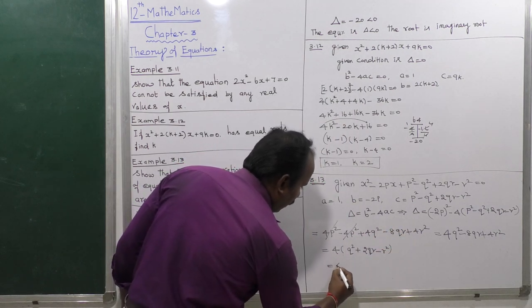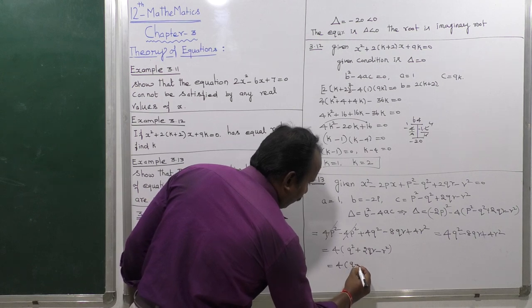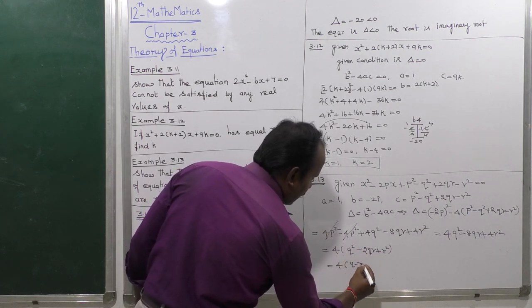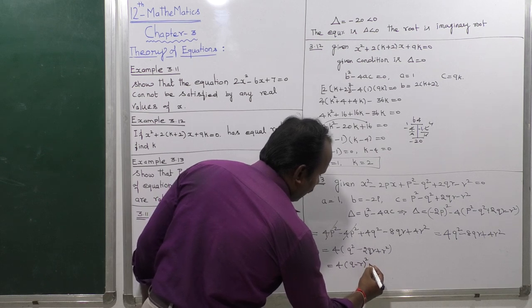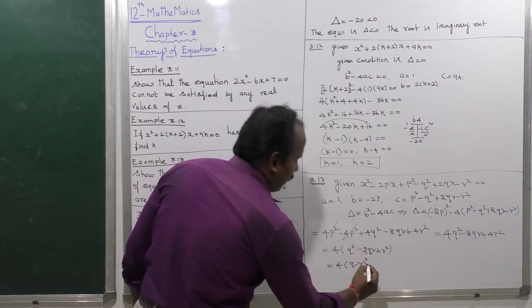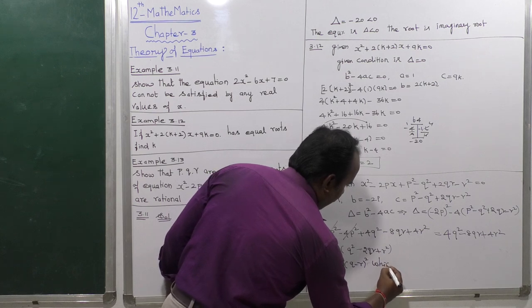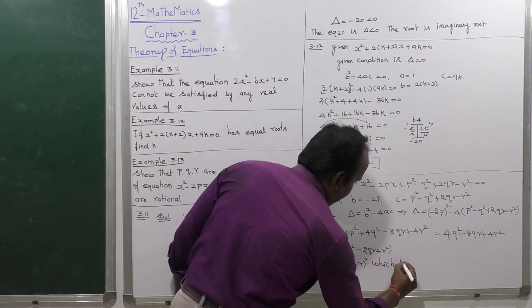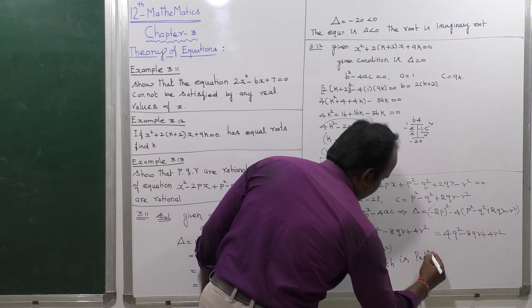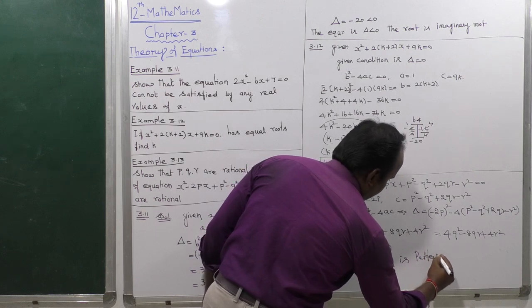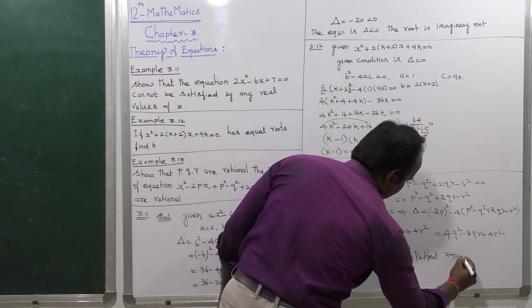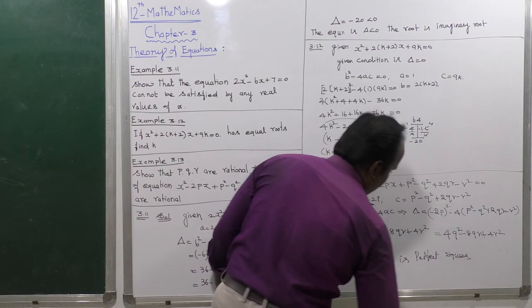This simplifies to 4 into (q minus r) the whole square, which is a perfect square. Since delta is a perfect square, the roots are rational.